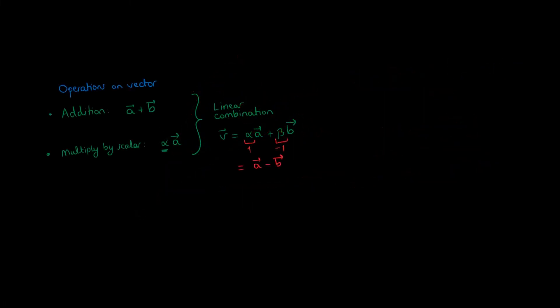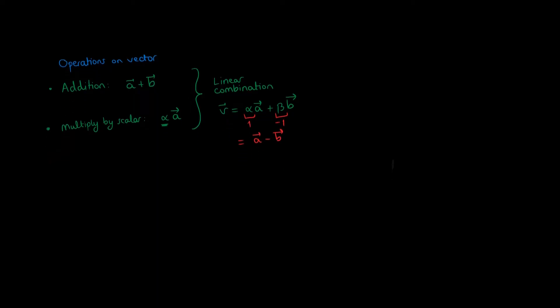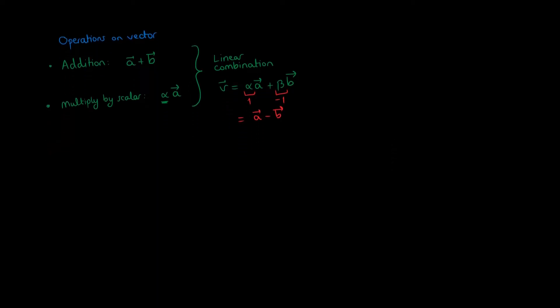Which other operations can we do on vectors? Can we multiply two vectors? Mathematicians define two useful ways of doing this. The scalar product, also called dot product, denoted by a dot b. And the vector product, also called cross product, denoted by a cross b.